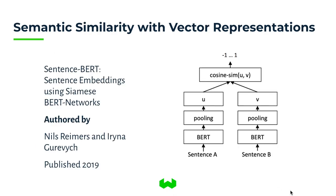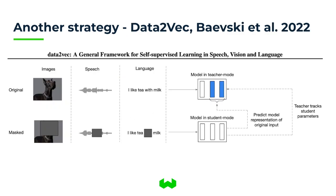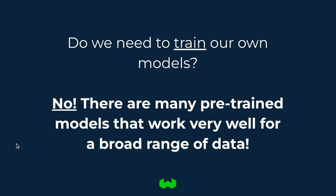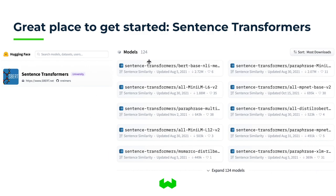You might be intimidated by the idea of needing to train your own models, but one of the most exciting trends is that the answer is increasingly no. There are many pre-trained models that work well for a very broad range of data. Models trained on Wikipedia or query-passage pairs in the MS MARCO dataset are able to generalize and produce reasonable representations for, say, my Twitter data. Sentence Transformers from Hugging Face is an excellent place to get started on looking at models that produce vector representations off the shelf for all kinds of data domains.